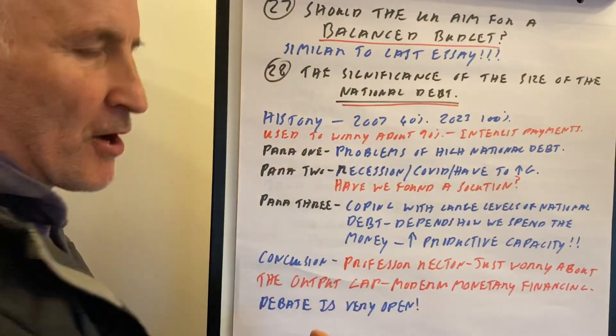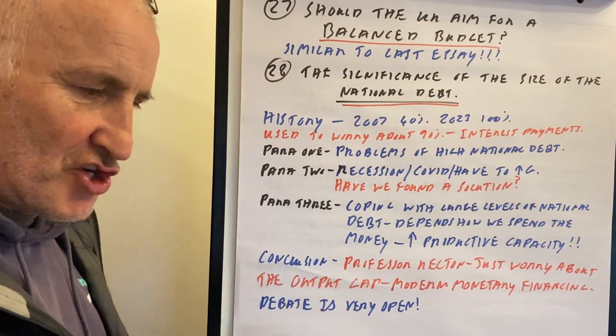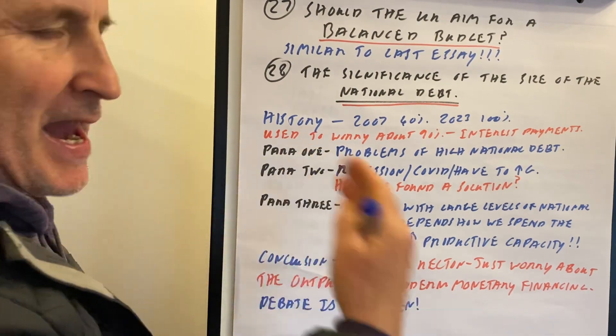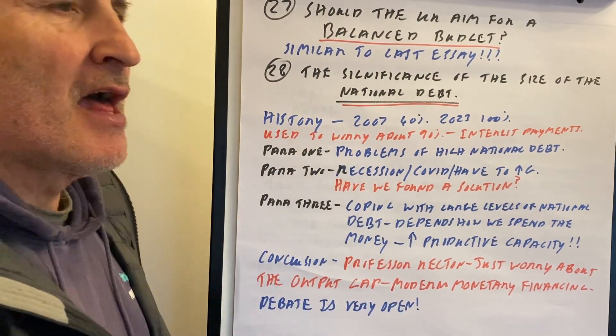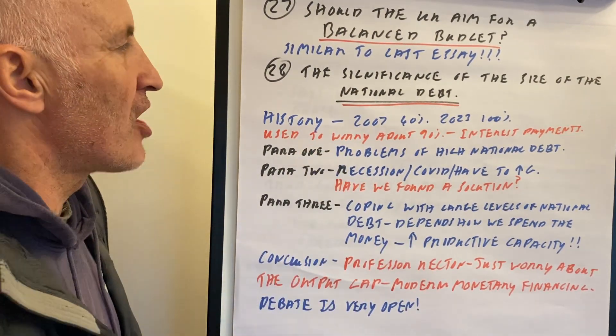Should the UK aim for a balanced budget? A balanced budget is where G is equal to T, or you might have a balanced budget over a period of time.